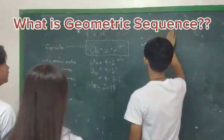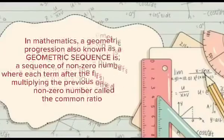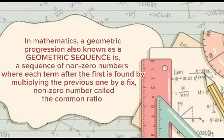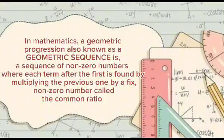What's the geometric sequence? In mathematics, a geometric progression, also known as a geometric sequence, is a sequence of non-zero numbers where each term after the first is found by multiplying the previous one by a fixed, non-zero number called the common ratio.